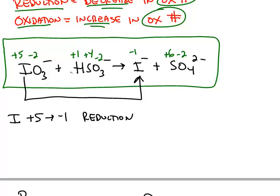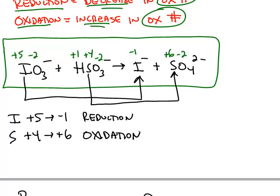Oxygen was a -2 in both chemicals on the left and is still -2 on the right, so that's not oxidized or reduced. The thing that is oxidized is sulfur, which goes from a +4 to a +6. That's an increase in the oxidation number, so it is an oxidation.